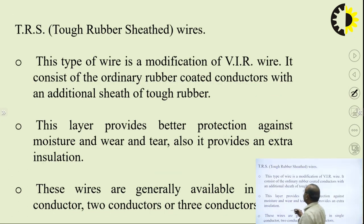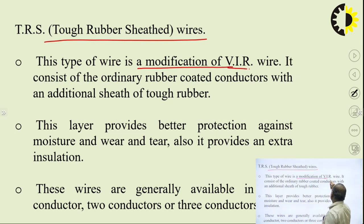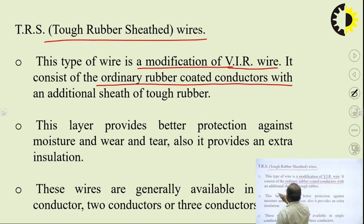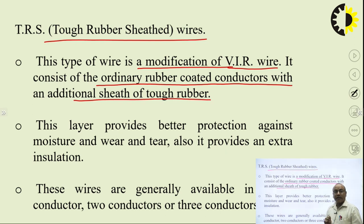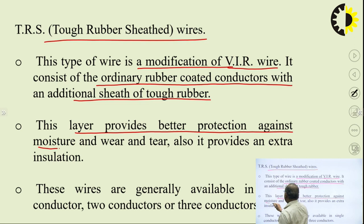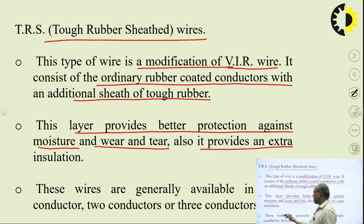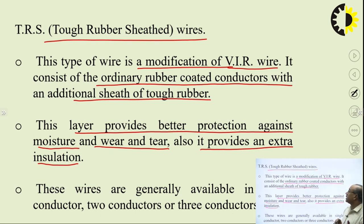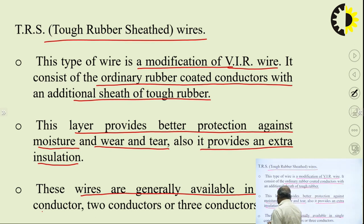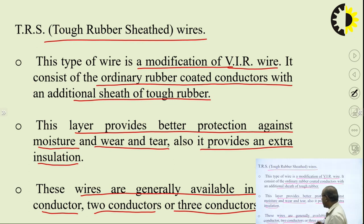The next type is TRS wire — Tough Rubber Sheath wire. It is basically a modification of the VIR wire. It consists of ordinary rubber-coated conductors with an additional sheath of tough rubber. This layer provides better protection against moisture and wear and tear, and also provides extra insulation for the wire. These wires are generally available in single conductor, two conductor, or three conductor form.